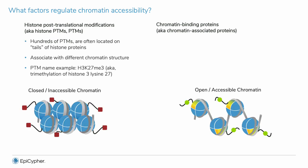Histone PTMs come in hundreds of varieties and are typically located on the tails of histone proteins. As shown in this schematic, PTMs often associate with and help maintain distinct chromatin states. The red PTM in this graphic is specific for closed chromatin, while the green is localized on open chromatin.